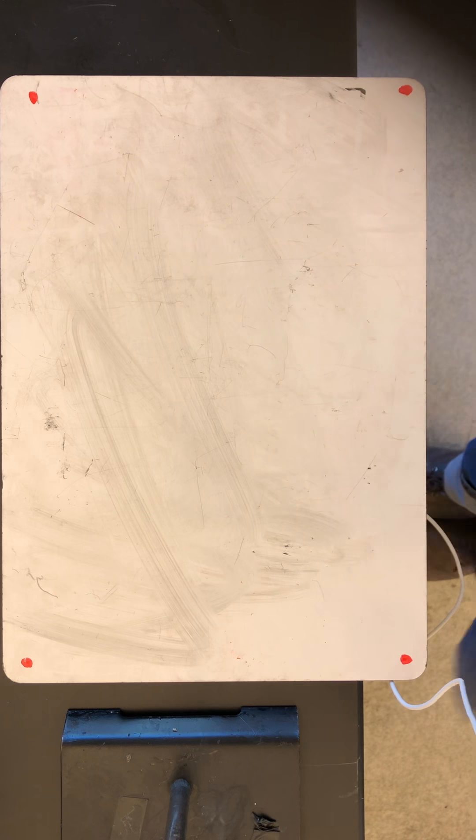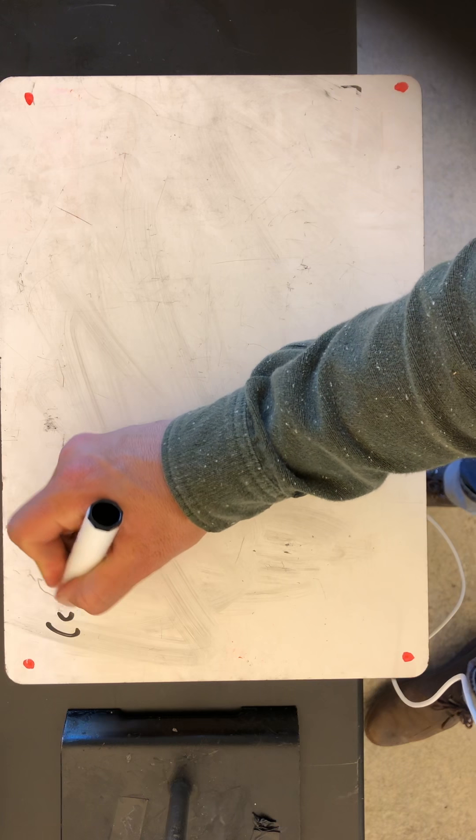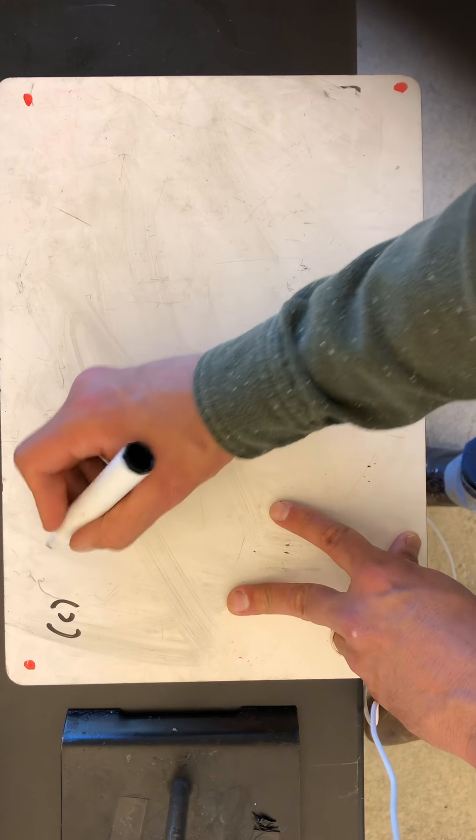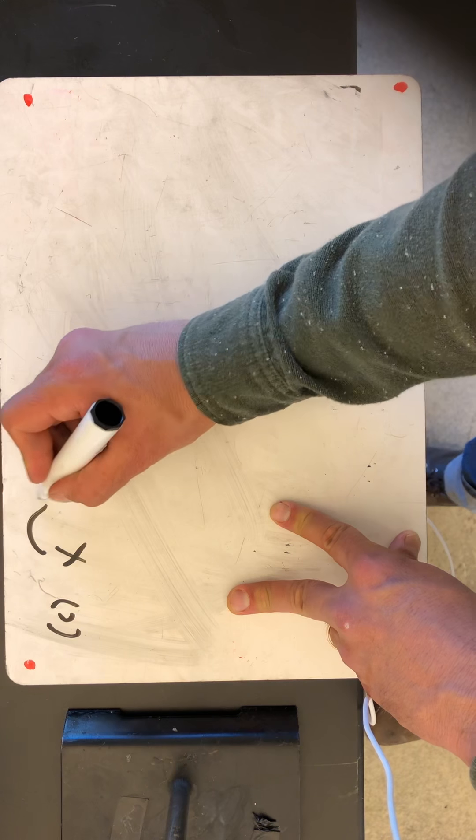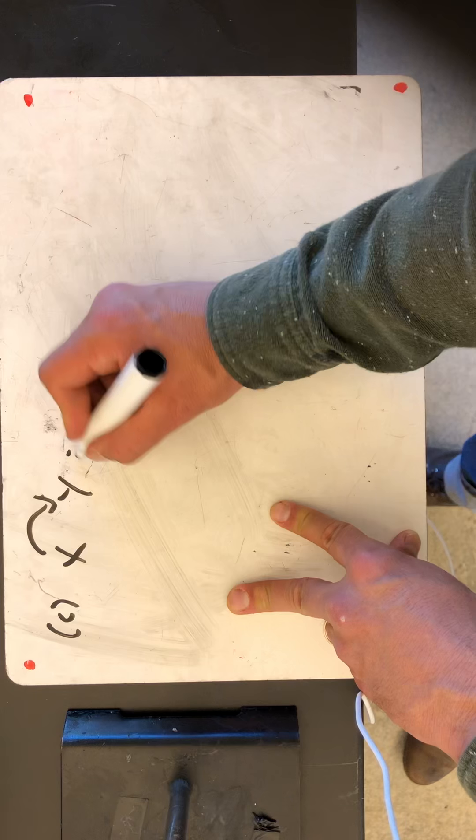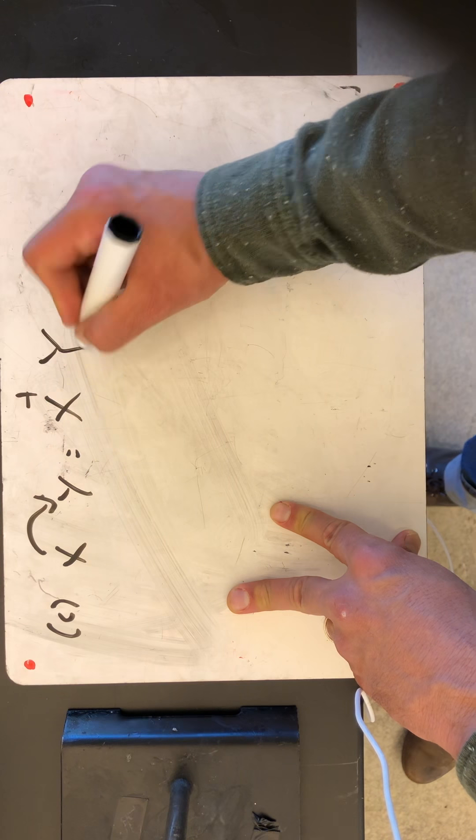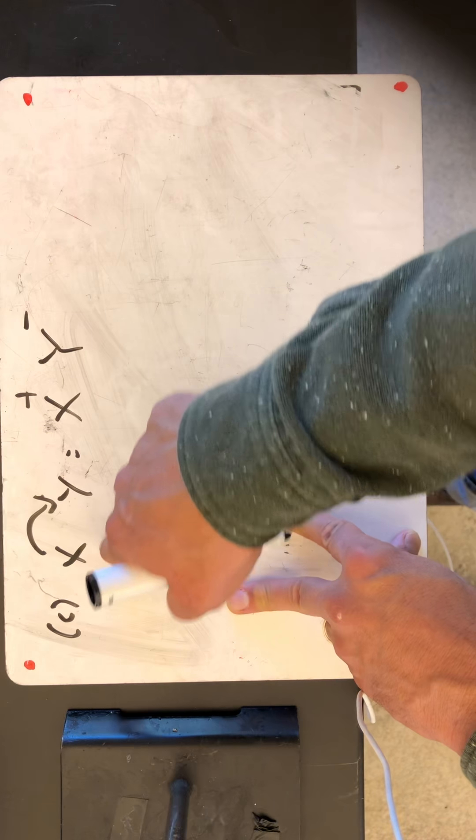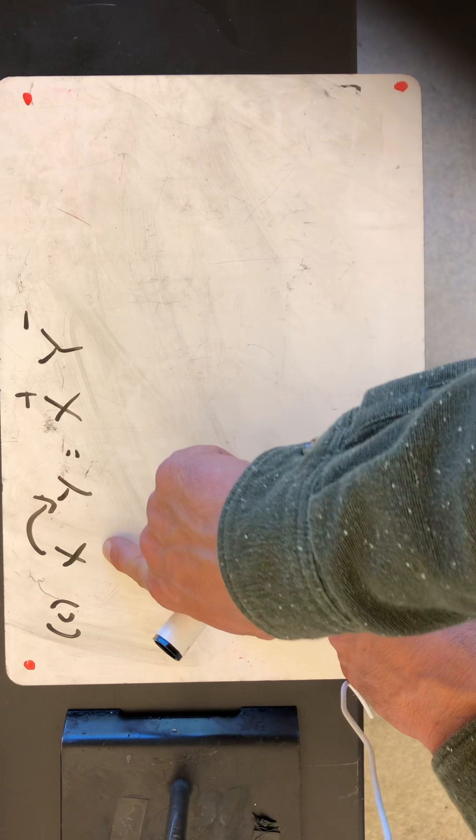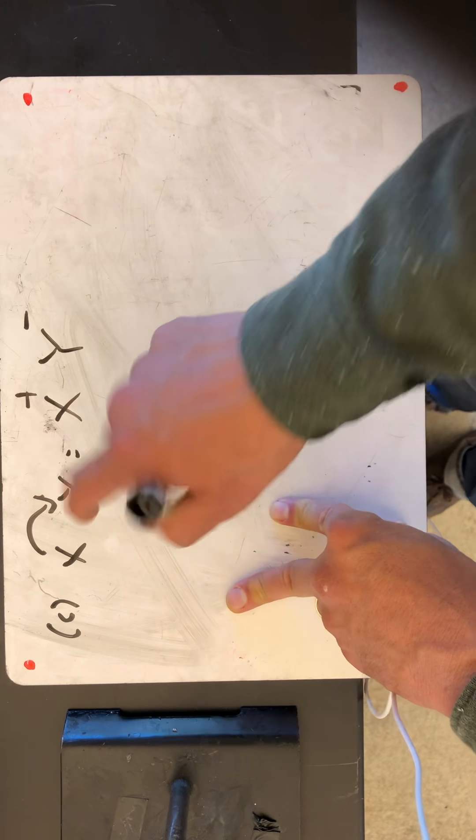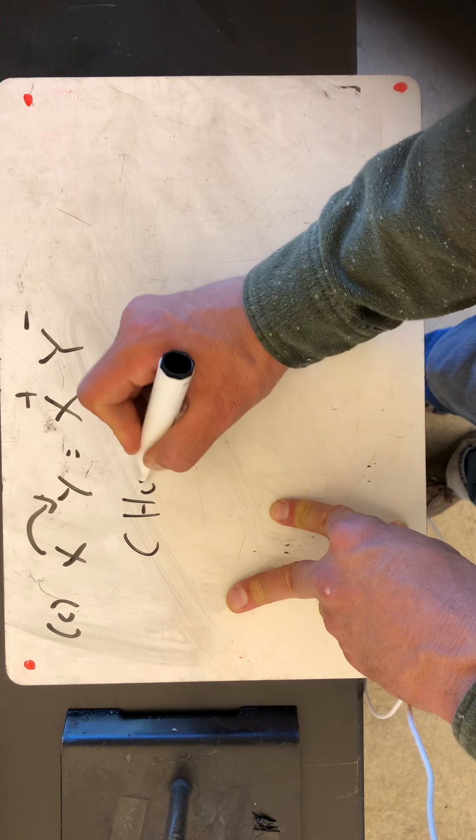In C, we know that an ionic compound is when you have one element, let's say X, fully give its electron to Y. And we are left with X plus and Y minus. And in this, we need something who is a giver and something who is a taker.